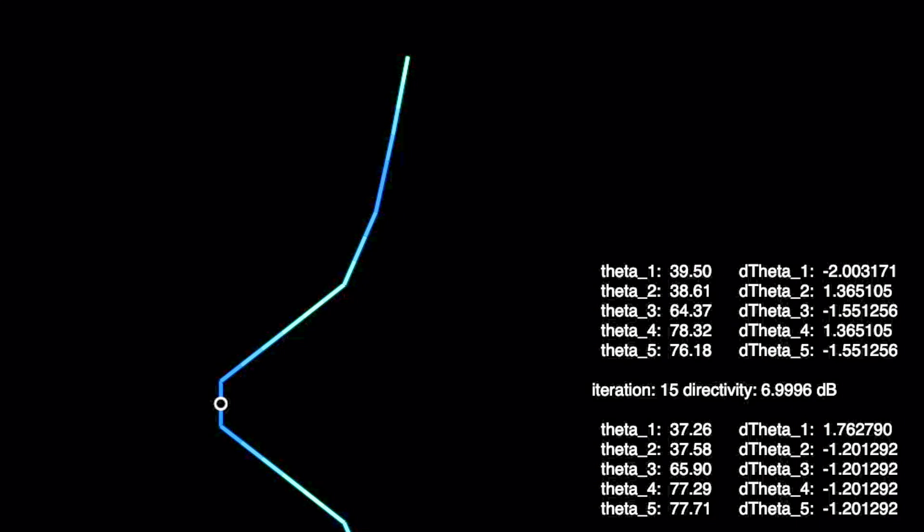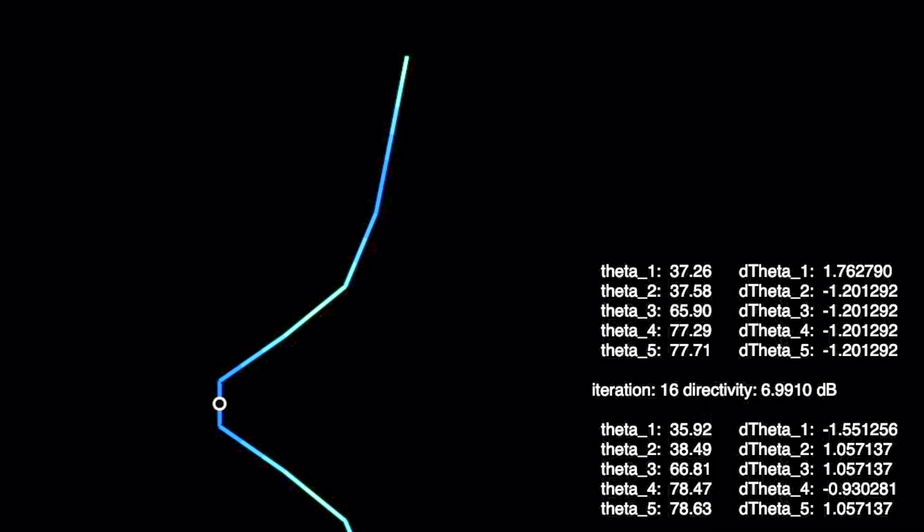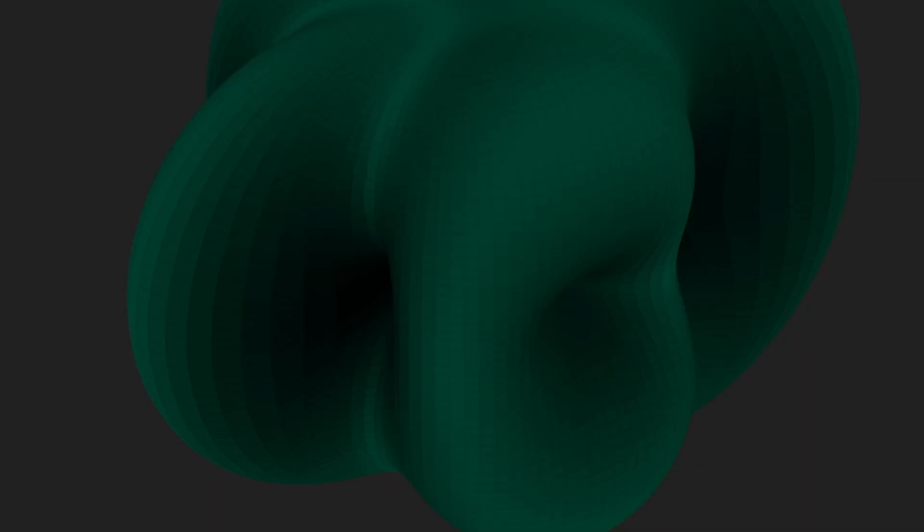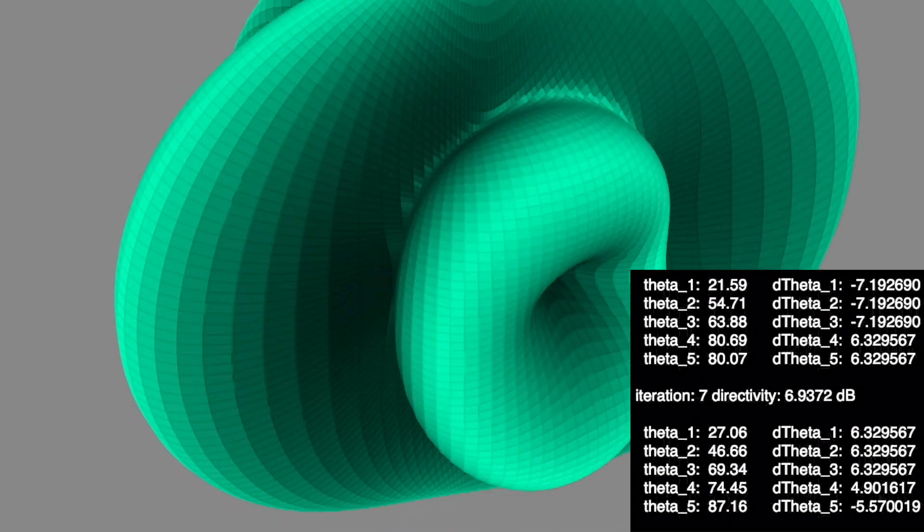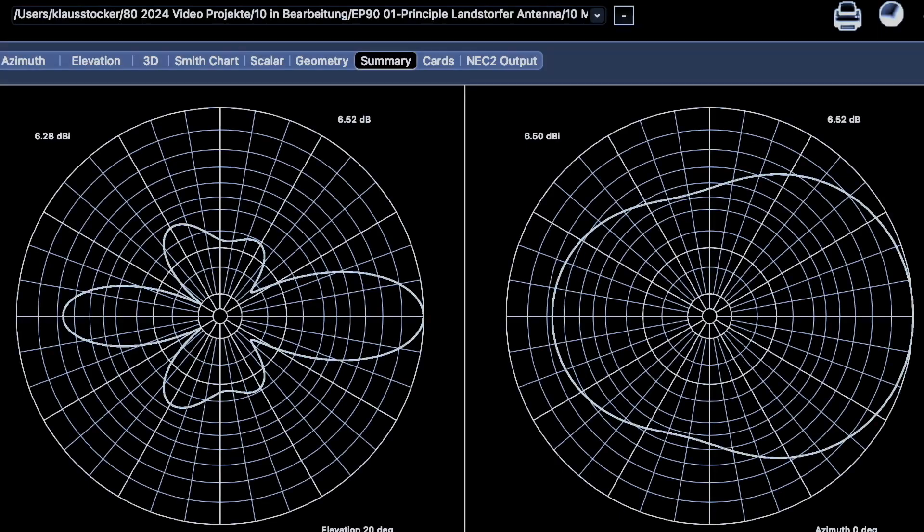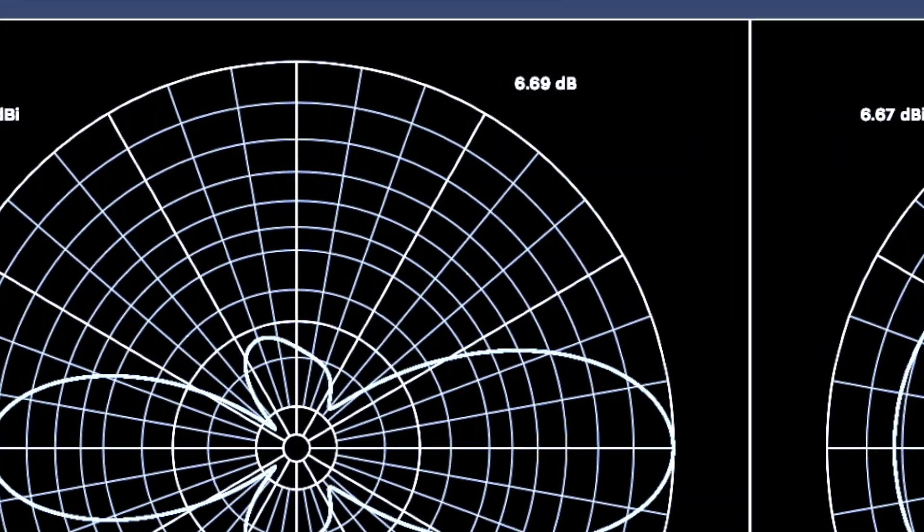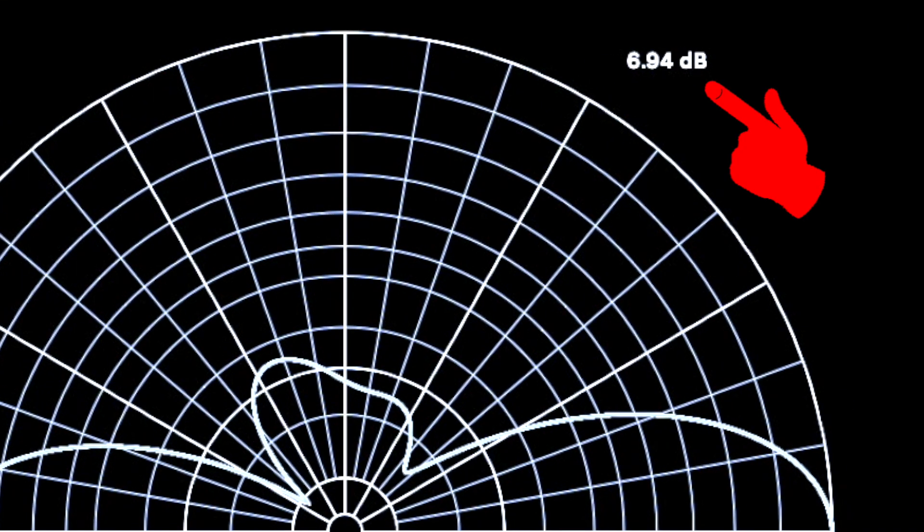After a number of iterations the computer finds the known shape generating the maximum directivity. Then let's take a look at the radiation characteristics. I have to show you this in time-lapse because otherwise the process would take far too long for the video.